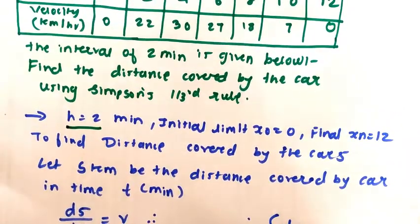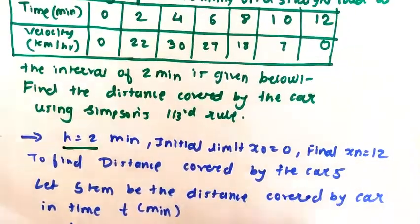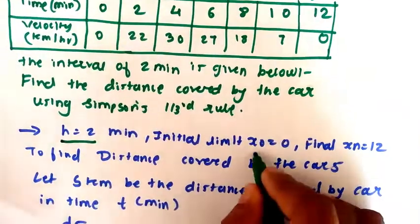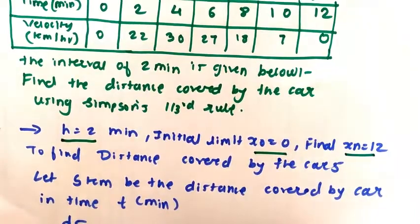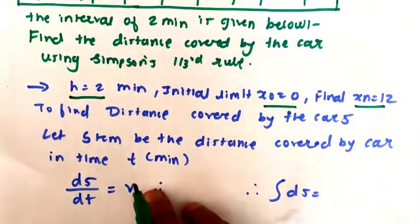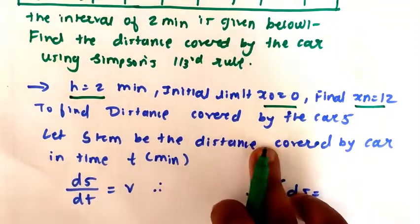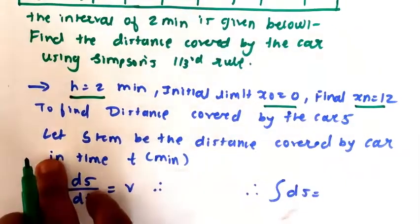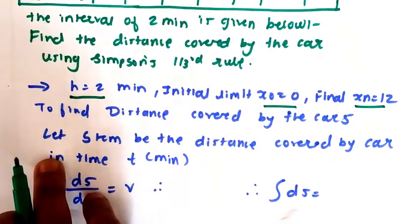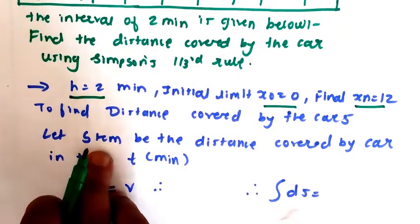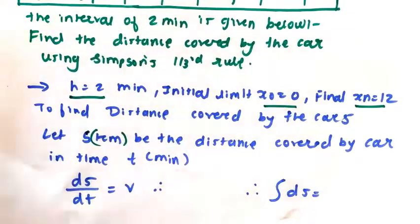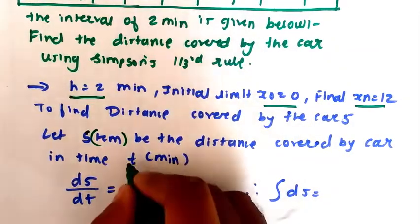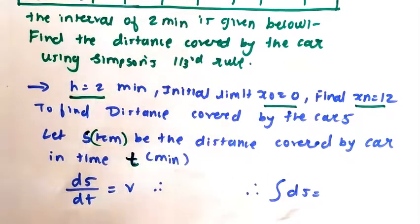Next, the initial limit is x0, so initial limit is x0 and final is xn equals 12. To find the distance covered by the car, let s kilometers be the distance covered by the car in time t minutes.